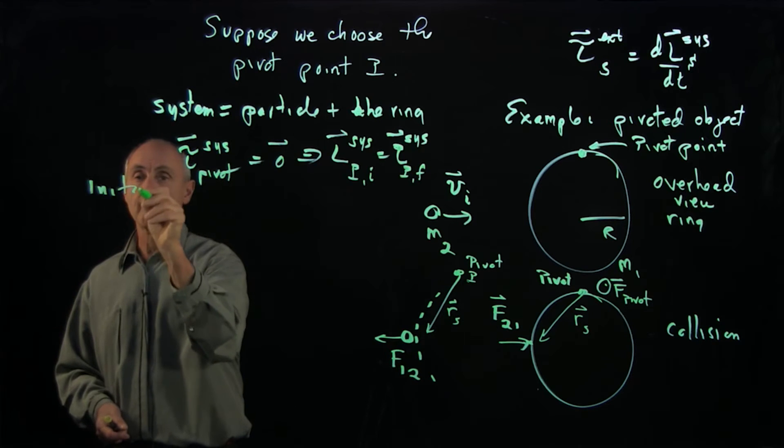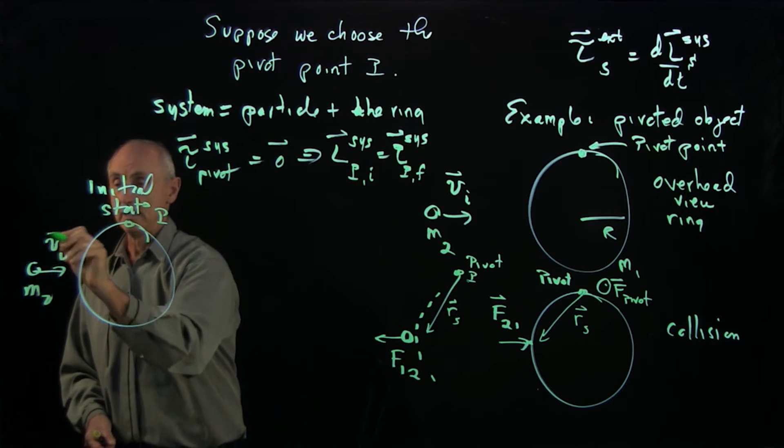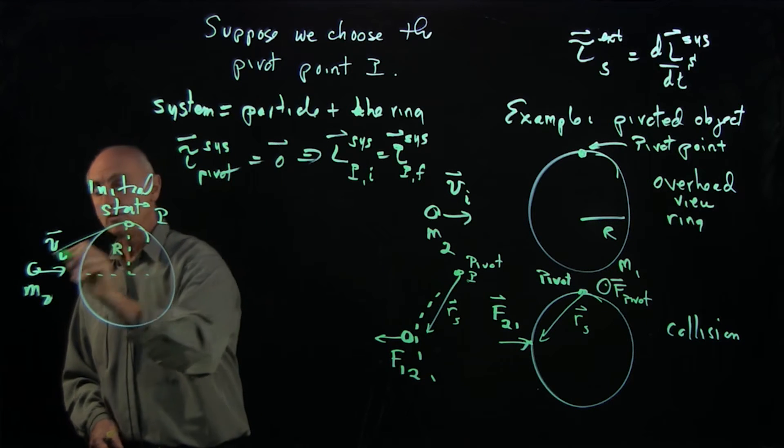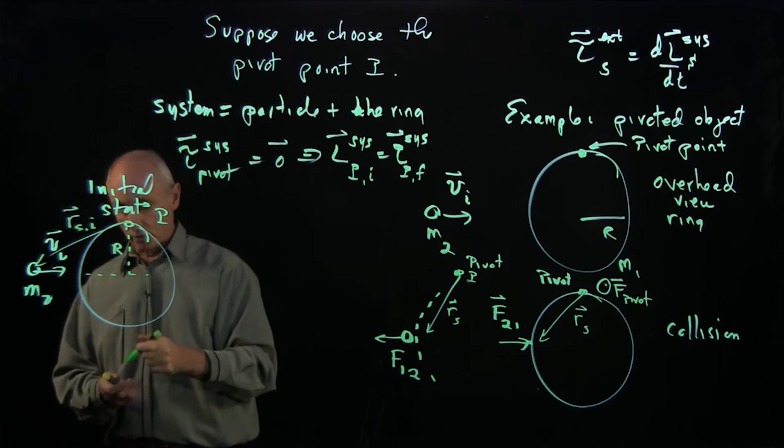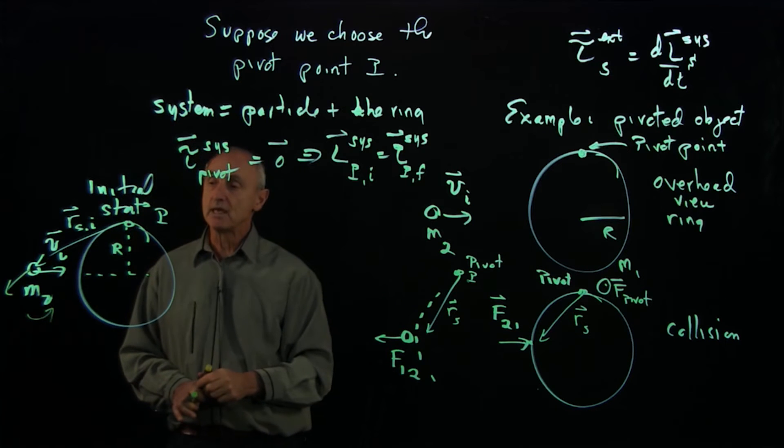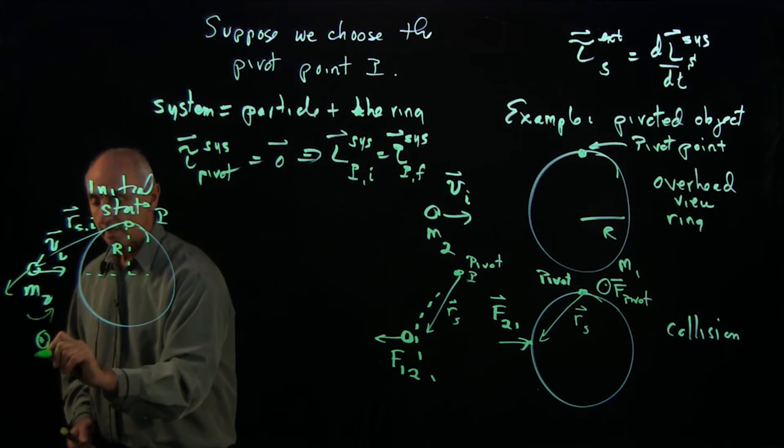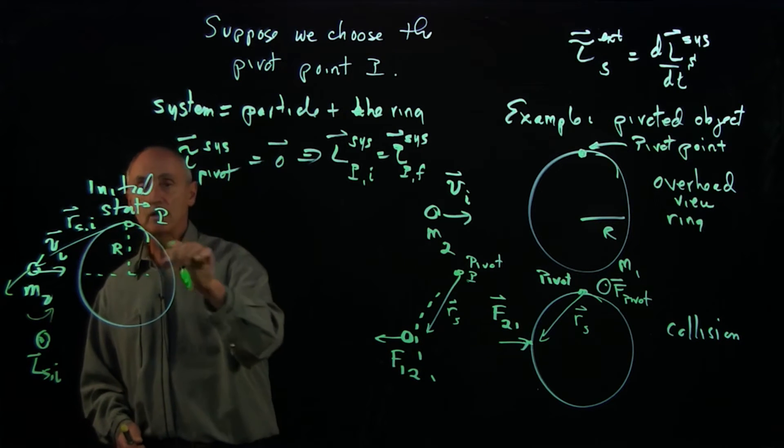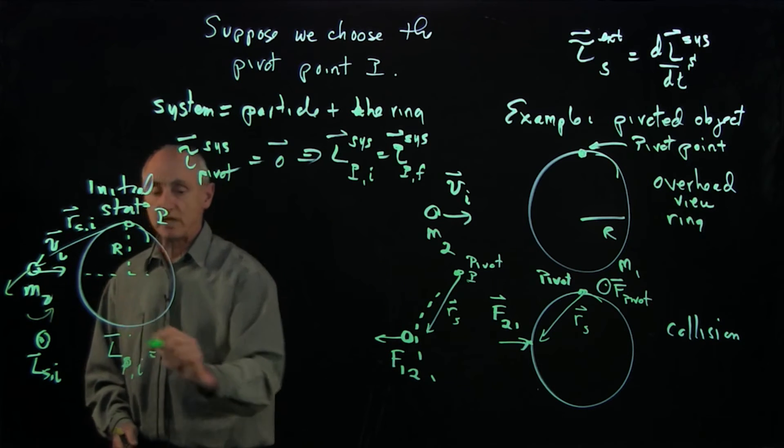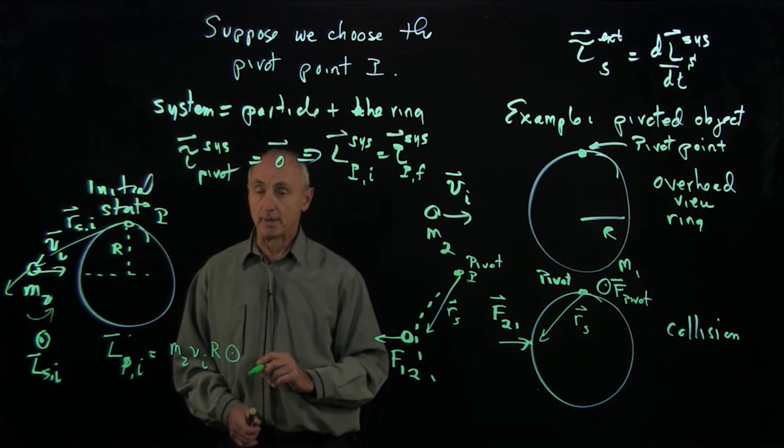In particular, suppose our initial state is, here's the pivot. Our object is coming in. That was M2VI. The moment arm is R. And our vector from here to the object, RS initial has a moment component that way. If we put these vectors tail to tail and figure out that the angular momentum is pointing in this direction, L initial I. And the moment arm is R. Then the initial angular momentum about this pivot point is just due to this moving object. So that's M2VIR. And we'll denote its direction that way.